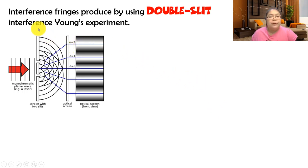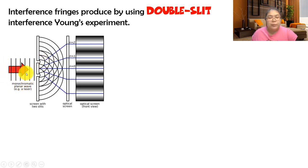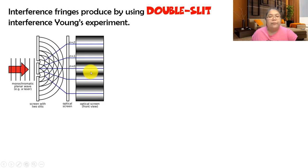This experiment is called Young's experiment. It starts with monochromatic light passing through two slits (double slit). After passing through, the light interferes and produces alternating bright and dark fringes on a screen, where the distance between fringes is almost constant.